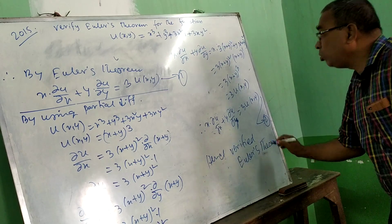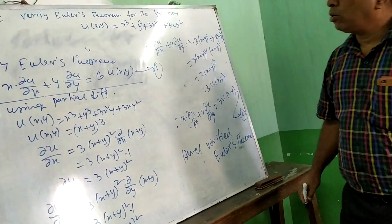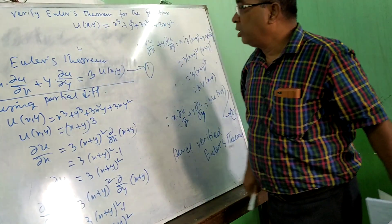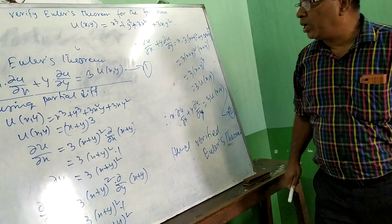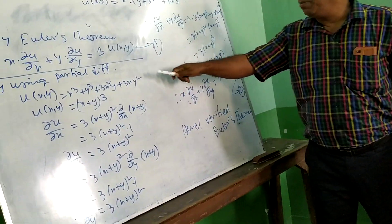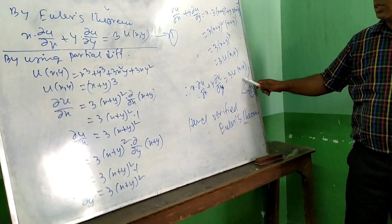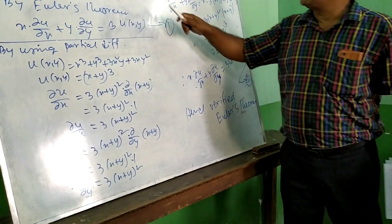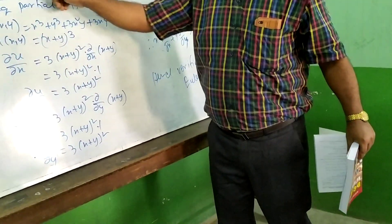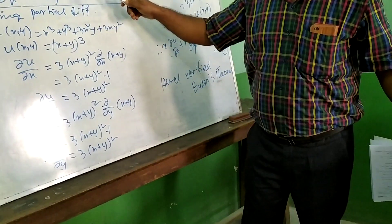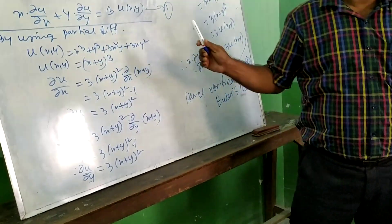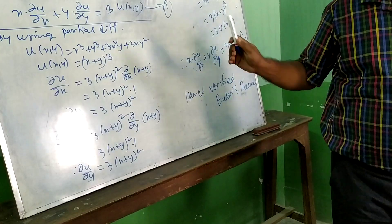So what will you do: suppose the question is to verify Euler's theorem, then first apply Euler's theorem, then do partial differentiation. If the question gives a function and asks you to prove a certain result, then after applying Euler's theorem proceed accordingly. Thank you very much.